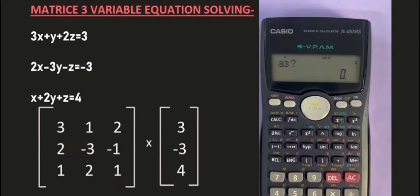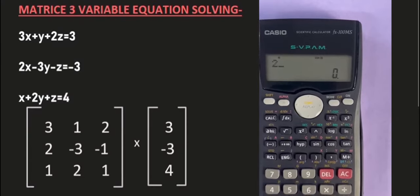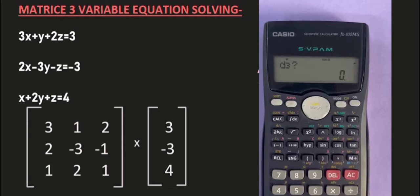Going on the last row, A3 is equal to 1, B3 is equal to 2 and C3 is equal to 1, D3 is equal to 4.